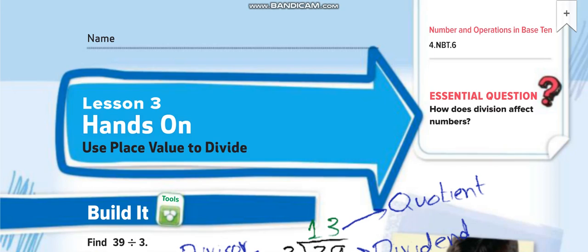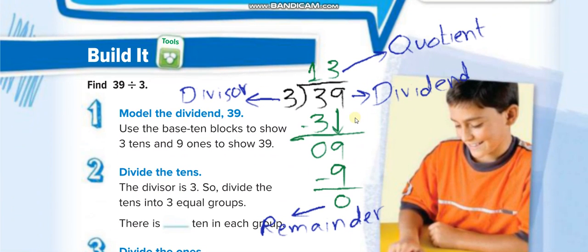This is the first lesson in which we are going to divide using long division. Whenever we are dividing two numbers like 39 divided by 3, there are some rules to memorize. The first number, called the dividend, comes inside the division sign. The second number comes outside the division sign and we call it the divisor. The number left at the end we call the remainder, and the answer of division we call the quotient.